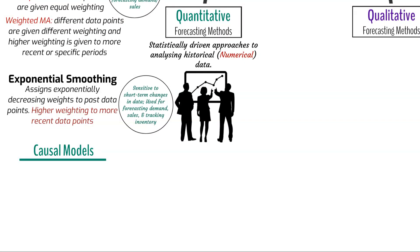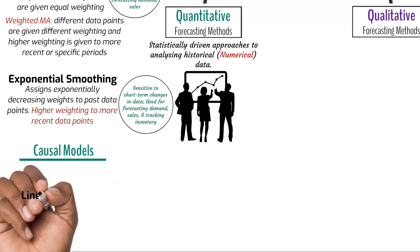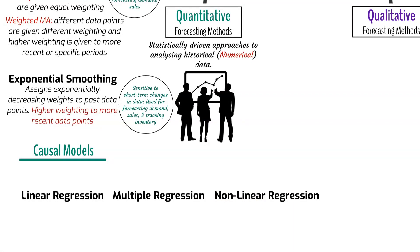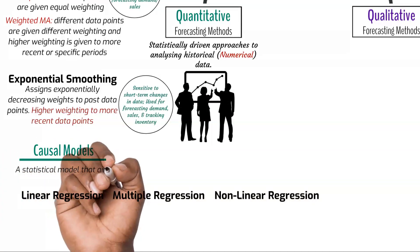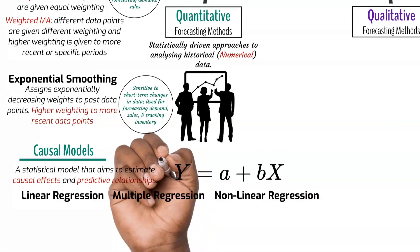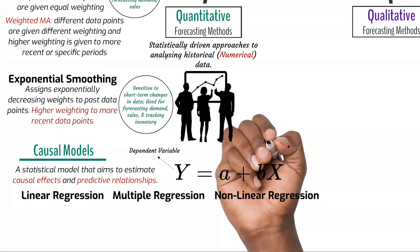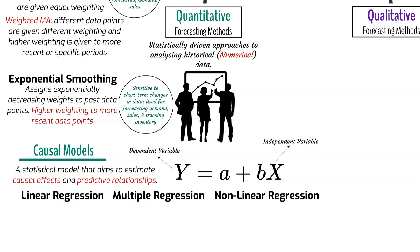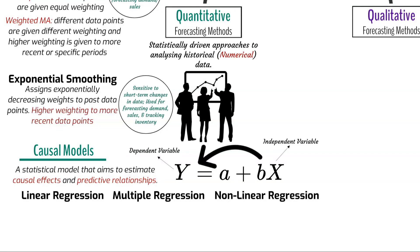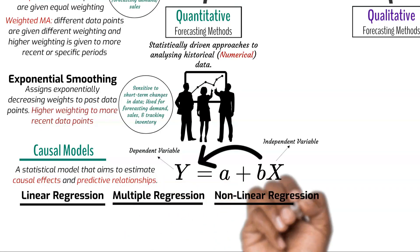The next commonly used quantitative method is causal models. Under this method, we have linear, nonlinear, and multiple regression models that can be used for forecasting. Causal regression models are a type of quantitative forecasting method used to predict future outcomes based on the relationship between a dependent variable and one or more independent variables. These variables are symbolic representations of data or information in numerical values. Causal models assume that there is a cause-and-effect relationship between the variables, and aim to quantify how changes in the independent variables impact the dependent variable.